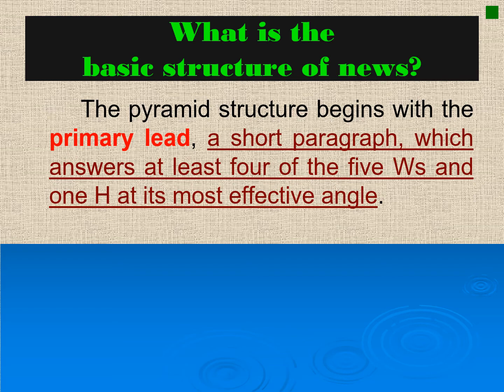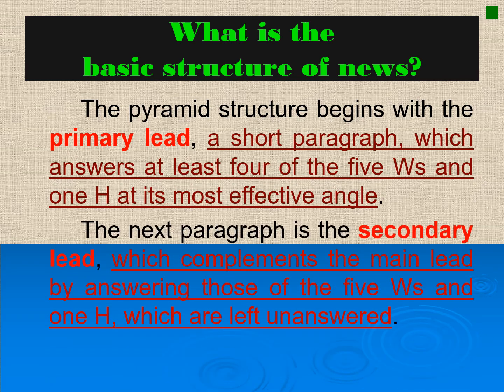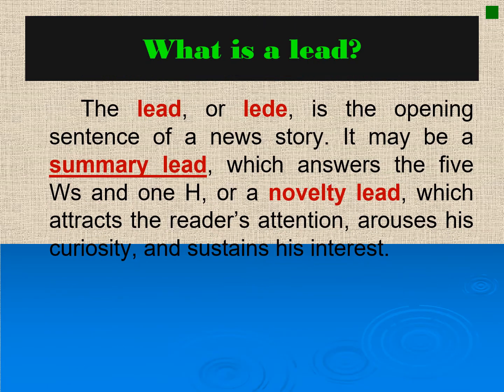So remember that when you write a news story based on a children's story, you have to follow the inverted pyramid structure. This begins with the primary lead — a short paragraph that answers at least three or four of the five W's and one H at its most effective angle. The next paragraph is the secondary lead, which complements the main lead by answering those not answered in the first paragraph. The lede (L-E-D-E) is the opening sentence of a news story, and it may be a summary lead, which answers the five W's and one H, or a novelty lead, which attracts the reader's attention, arouses curiosity, and sustains interest. Discussions of different types of leads — such as summary lead, novelty lead, or grammatical beginning lead — are also found in this channel.